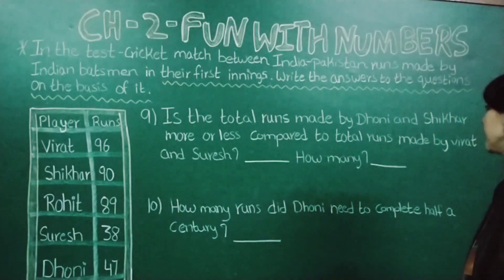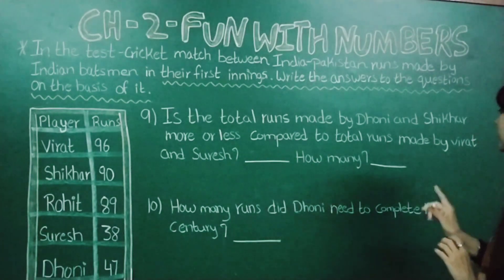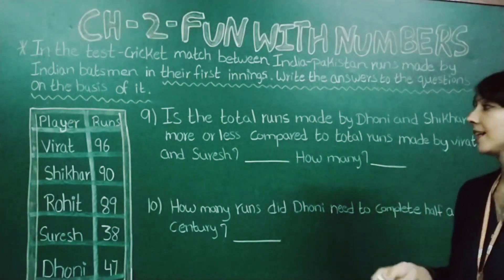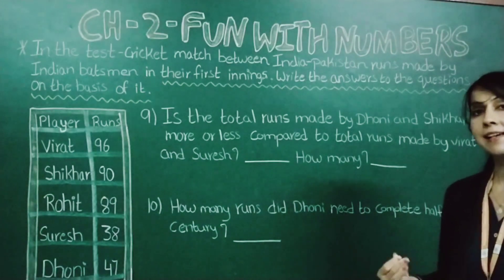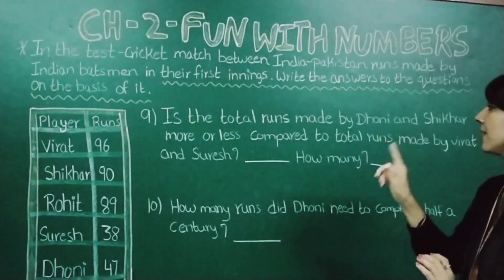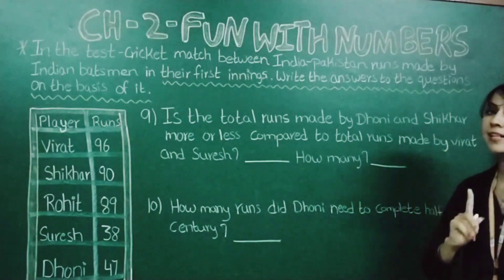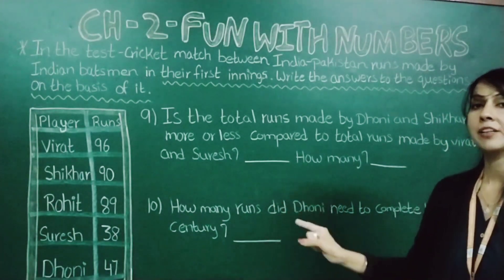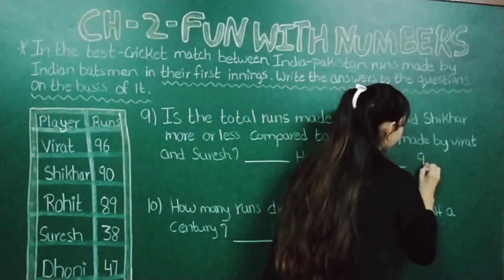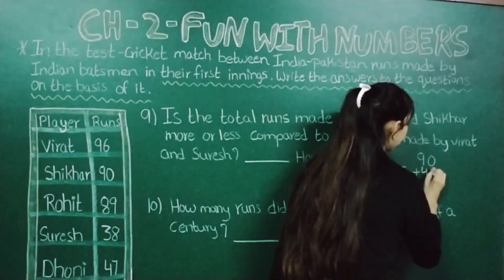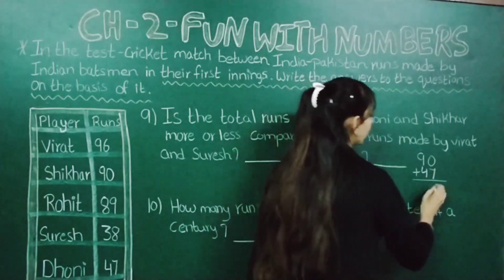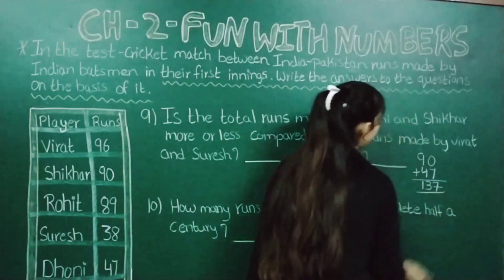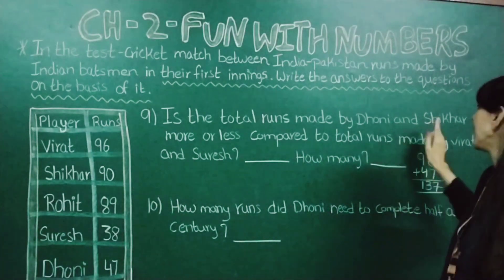Is the total runs made by Dhoni and Shikhar more or less compared to total runs made by Virat and Suresh? First of all we will add the total runs made by Dhoni and Shikhar. Shikhar has made 90 runs and Dhoni has made 47 runs, so we add: 90 plus 47. Now 0 plus 7 gives 7, and 9 plus 4 gives 13. So total runs made by Dhoni and Shikhar is 137.